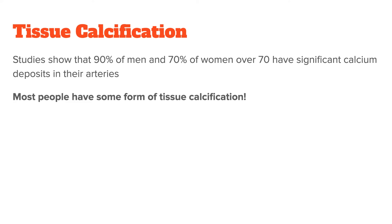While these official figures might make it seem like this is an old people's problem, my own experience and that of many practitioners who specialize in the field says otherwise. I would go so far as to say that most people have some form of tissue calcification, but because the problem is so difficult to diagnose, it often goes unnoticed for many years while their bodies accumulate more and more calcium in the wrong places.